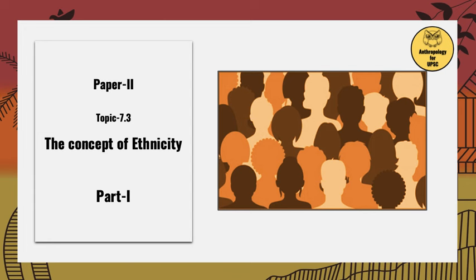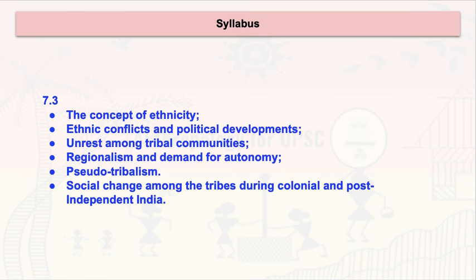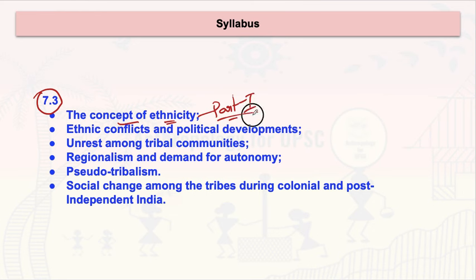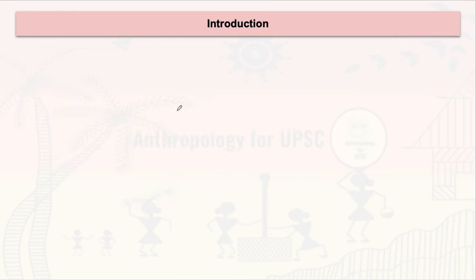Welcome to the anthropology lecture series for Paper 2. Today we are going to discuss topic 7.3. In this topic, you need to understand the concept of ethnicity, which we are going to cover in Part 1 with an elaborate discussion. The remaining content will be covered in Part 2 or Part 3 if needed. Today our focus will be on ethnicity.